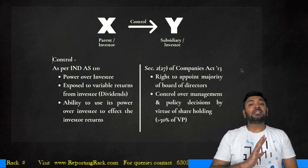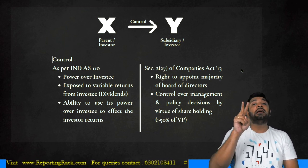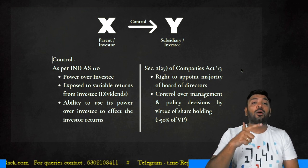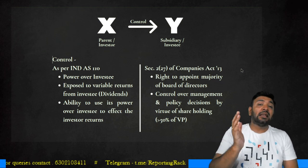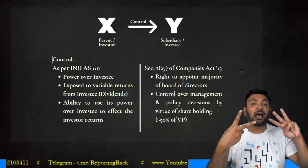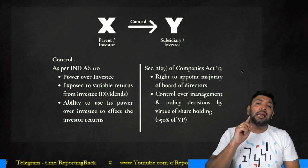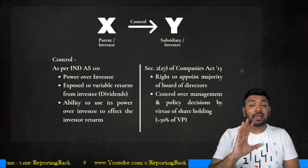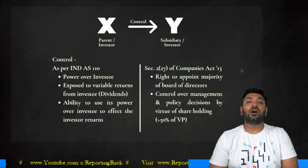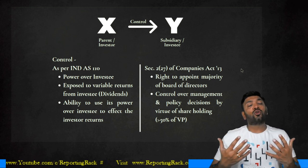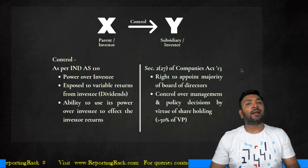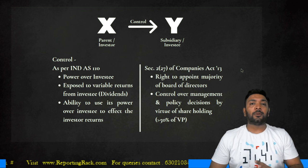Under Companies Act 2013 Section 2(27), the two types of control are separated by 'or', so either condition suffices — this means a subsidiary could theoretically have two holding companies. Under Ind AS 110, all three conditions are separated by 'and', meaning all must be satisfied simultaneously. Consequently, under Ind AS 110, a subsidiary can have only one holding company. Both definitions must be assessed together when determining whether control exists.